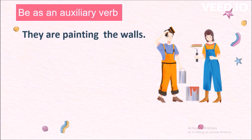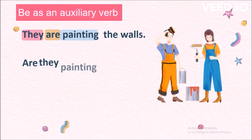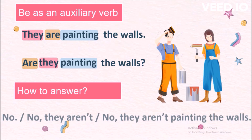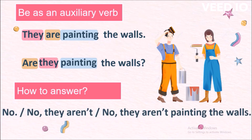In 'They are painting the walls,' they is the subject, are is the helping verb, and painting is the main verb. To form the question, we change the word order of the subject and the helping verb: Are they painting the walls? First the helping verb, then the subject, then the main verb, and the rest of the sentence. How to answer: no, or no they aren't, or no they aren't painting the walls.